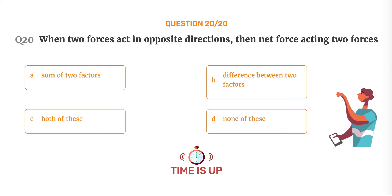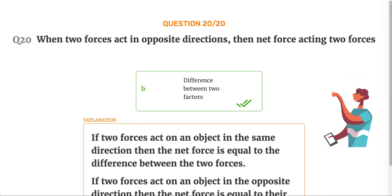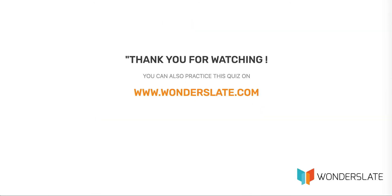The correct answer is Option B: Difference between two forces. If two forces act on an object in the same direction, then the net force is equal to the sum of the two forces. If two forces act on an object in the opposite direction, then the net force is equal to the difference of the two forces. Thank you for watching the video.